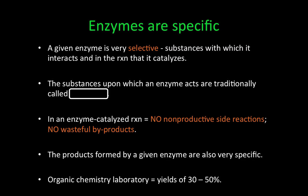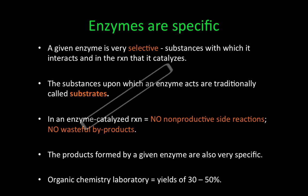Enzymes are specific. A given enzyme is very selective about the substances with which it interacts and the reaction that it catalyzes. The substances upon which an enzyme acts are traditionally called substrates. In chemistry we call reacting substances reactants, but in enzymology we give those reactants the special name: substrates.